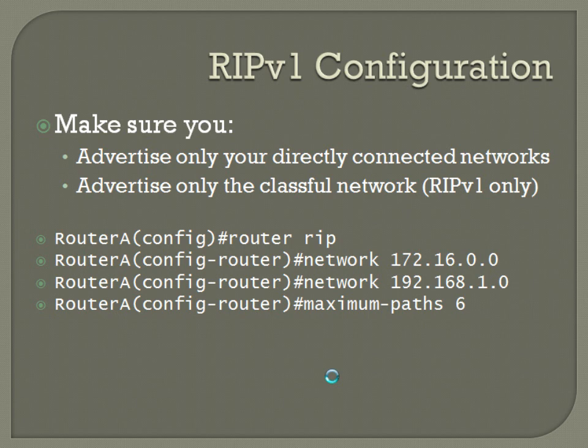You don't want to advertise a network that isn't directly connected to you, because if something on that router goes down you may not know about it, and you'd be sending out invalid route advertisements. The command structure starts with 'router rip', which puts you into the routing configuration mode. Whatever follows that is the protocol in question — for RIP it's 'router rip', for EIGRP it would be 'router eigrp'. Once in that mode, the prompt changes to config-router.